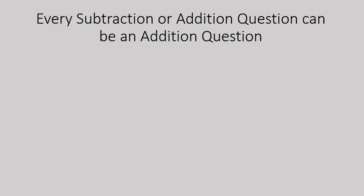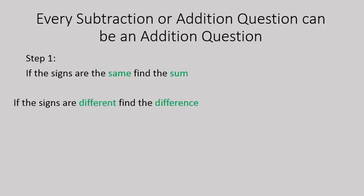Let's go ahead and review those rules. When you're adding numbers, if the signs are the same, you find the sum. If you're adding numbers with different signs — the signs are different — you find the difference.